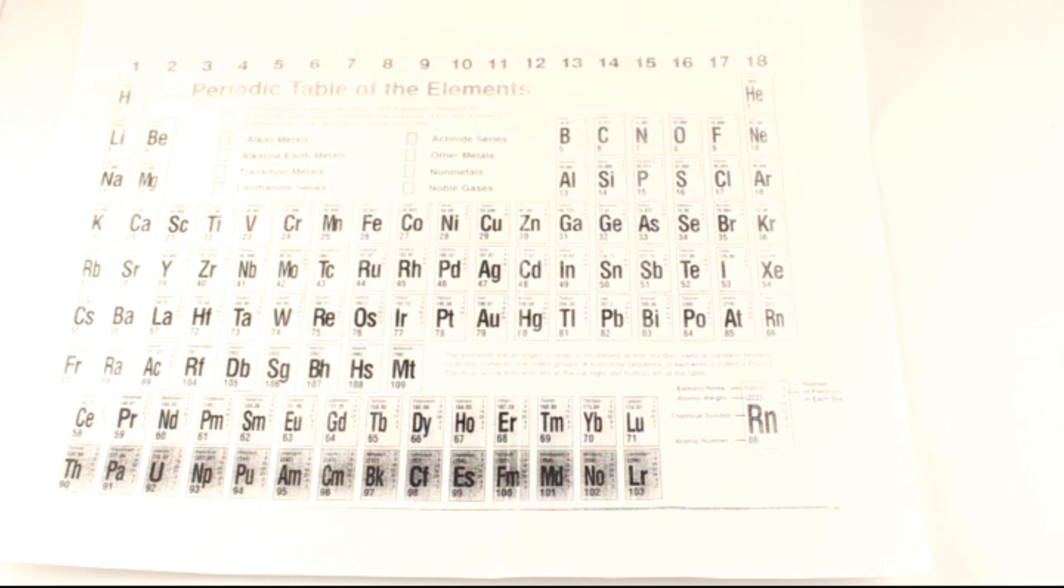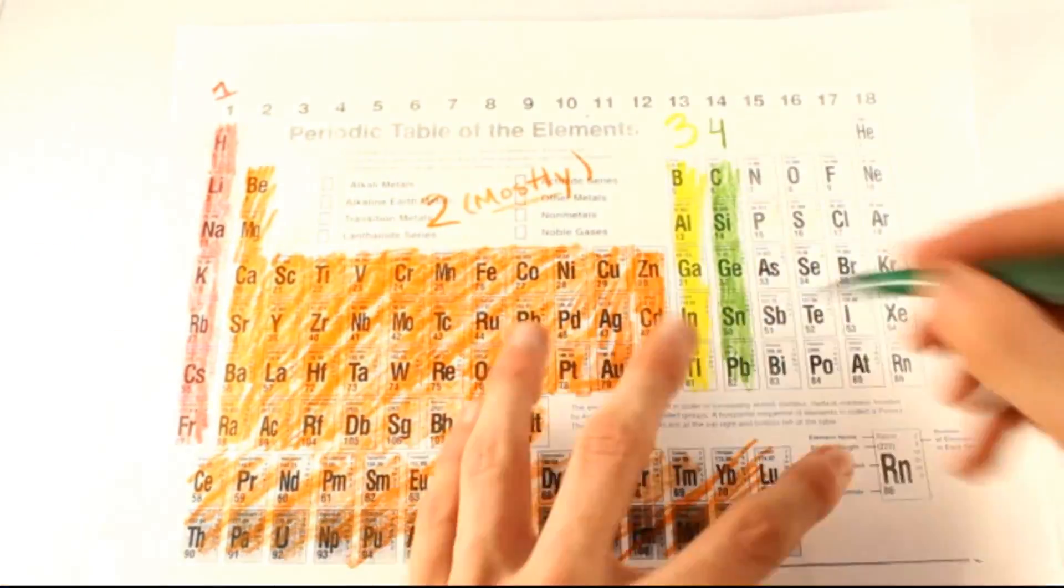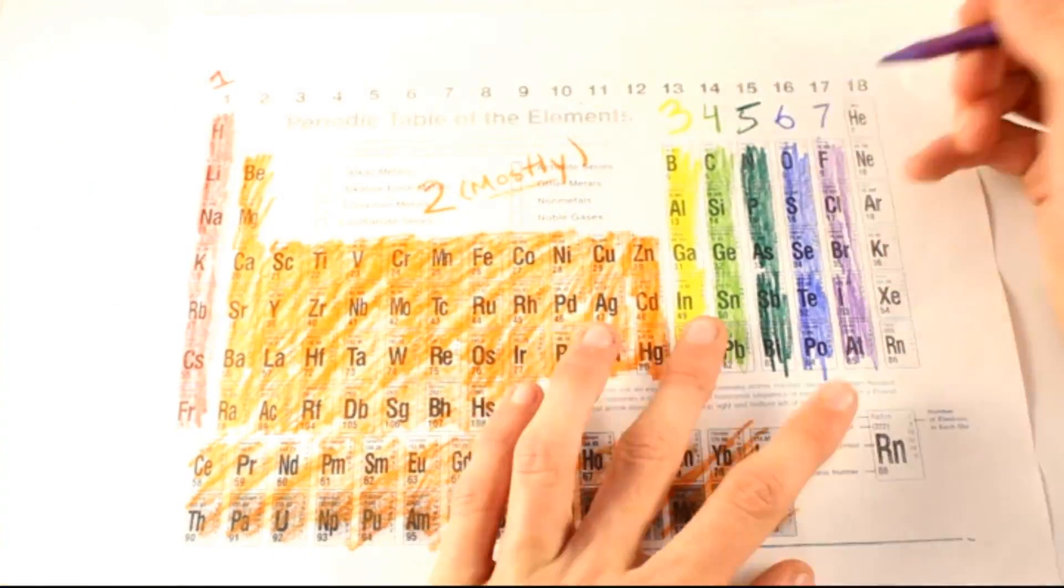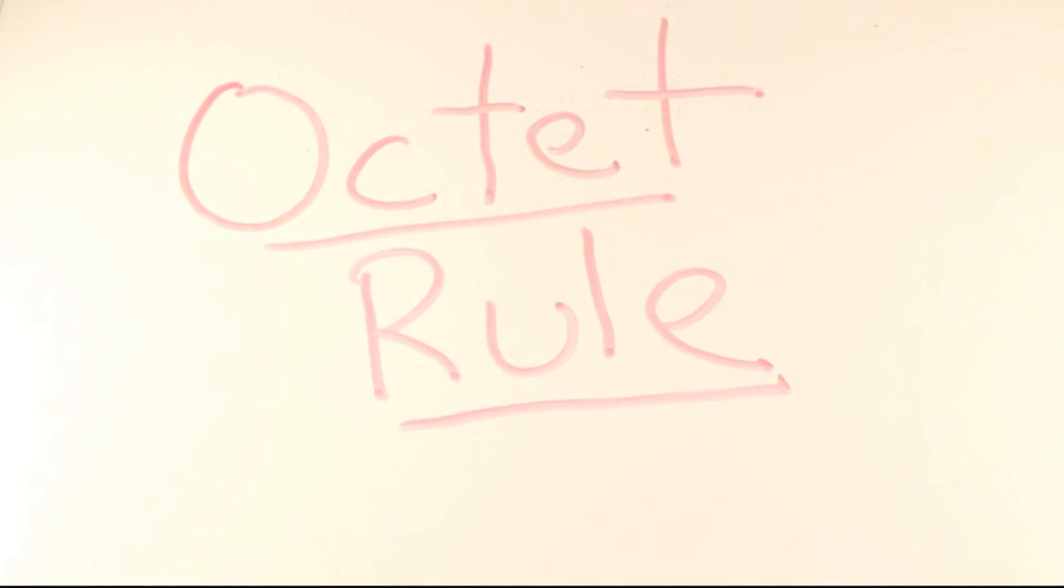The periodic table of elements is organized by the amount of valence electrons an atom of an element has. One valence electron, two valence electrons, three, four, five, six, seven, and eight, which is a full outer shell. This is called the octet rule.